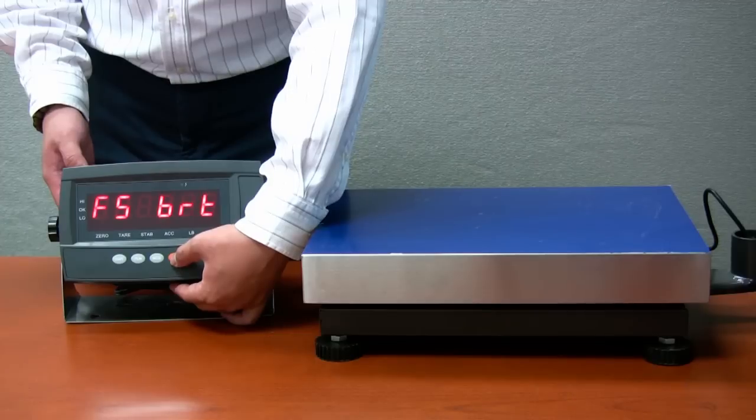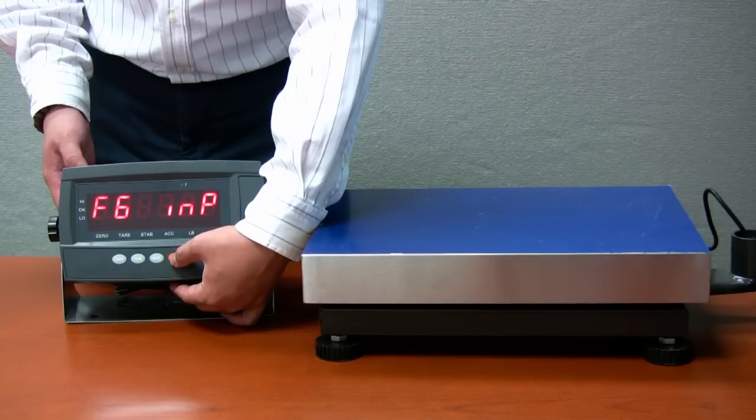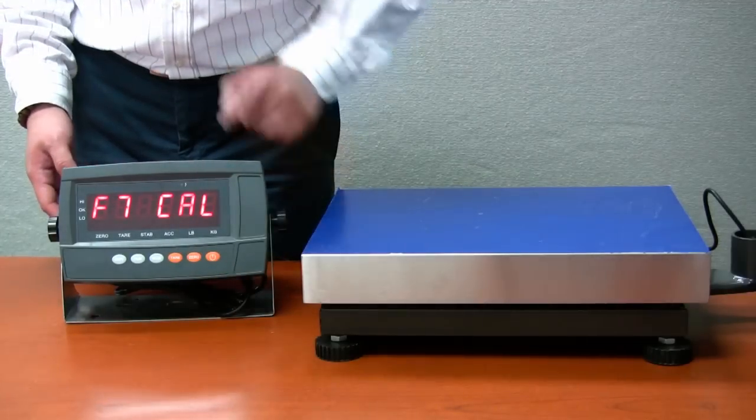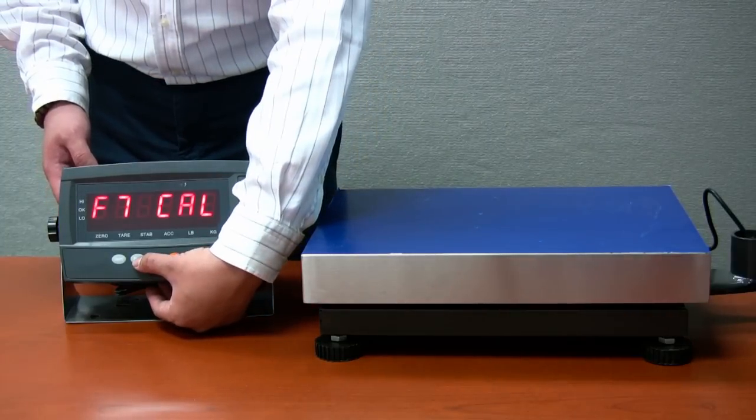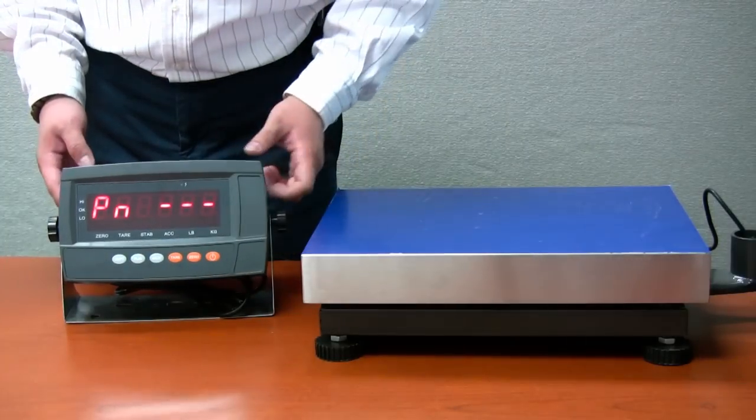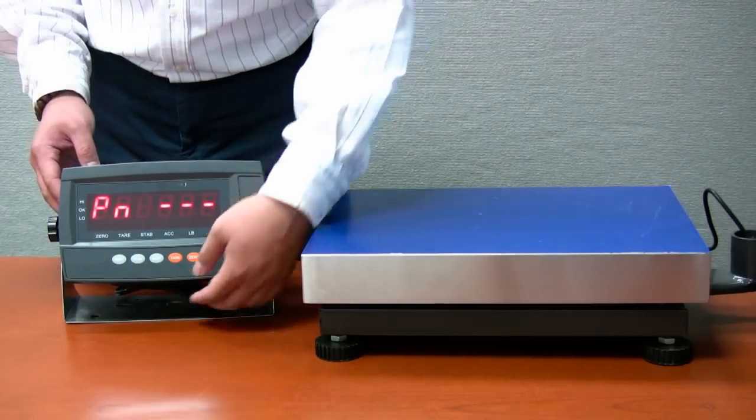Press TAR key six times and the indicator will show F7 C-A-L. Press function key to enter calibration password. The initial password is four zeros.